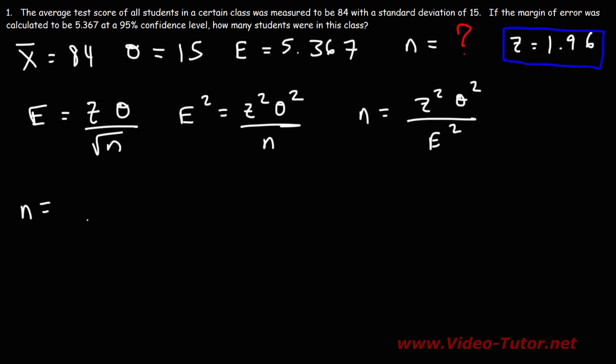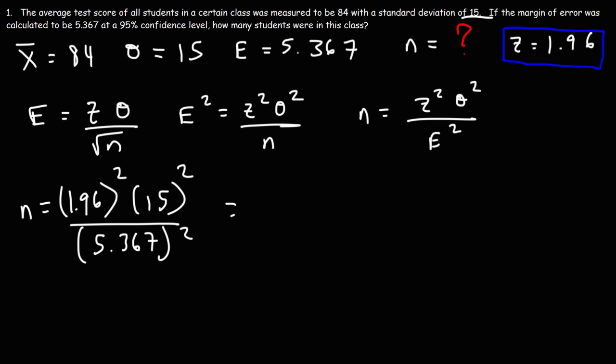So now that we know what z is we can plug it into this formula. The standard deviation is 15 and the margin of error is 5.367. So let's go ahead and plug everything into this formula. So the sample size is 30. So that's how many students were in this class when this particular statistical experiment was performed. So that's the answer for this problem.